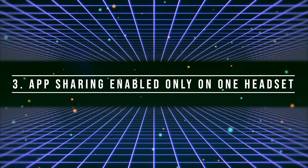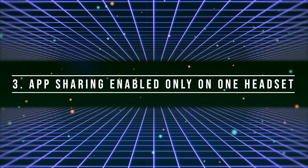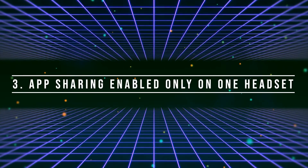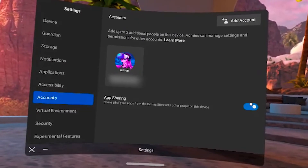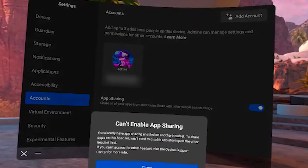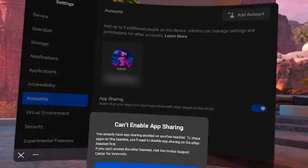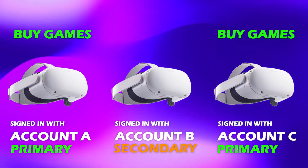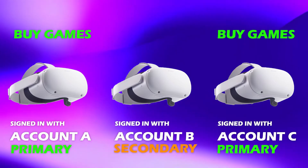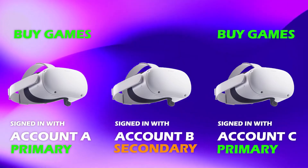Third, app sharing can be enabled only on one headset, meaning you can share your games with only one other headset. If you have a third headset, you cannot do this trick because the system will tell you that you already have app sharing enabled on your account on a different headset. So if you want to add a third player to the game, they will need to use their own account and their own game.